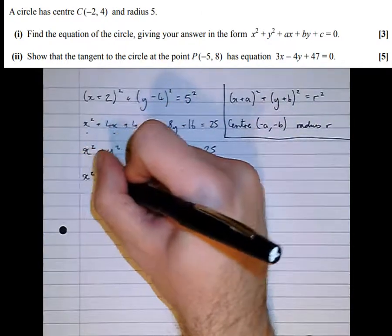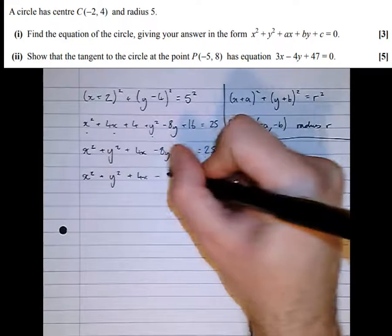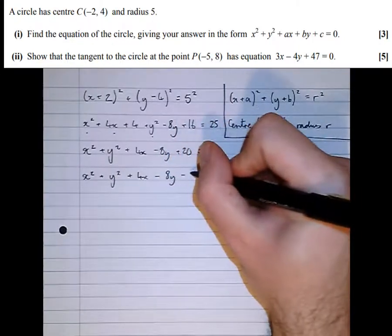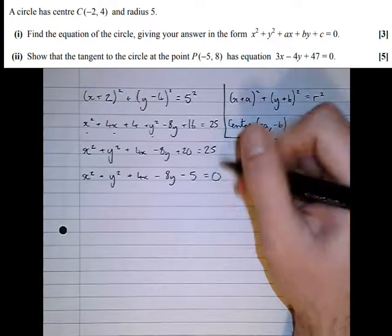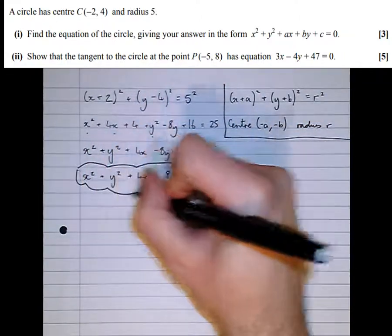Therefore, x² + y² + 4x - 8y - 5 = 0. And that's the answer required by part 1 of the question.